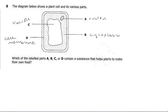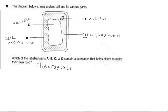The question is specifically asking for the part that contains a substance that helps plants to make their own food. When talking about a substance that helps plants make their own food, we're talking about the chloroplast. Now where is the chloroplast found? Is it found in the vacuole, the cell membrane, the nucleus, or the cytoplasm? The chloroplast is found in the cytoplasm, which is B. So the correct answer for that question is B.